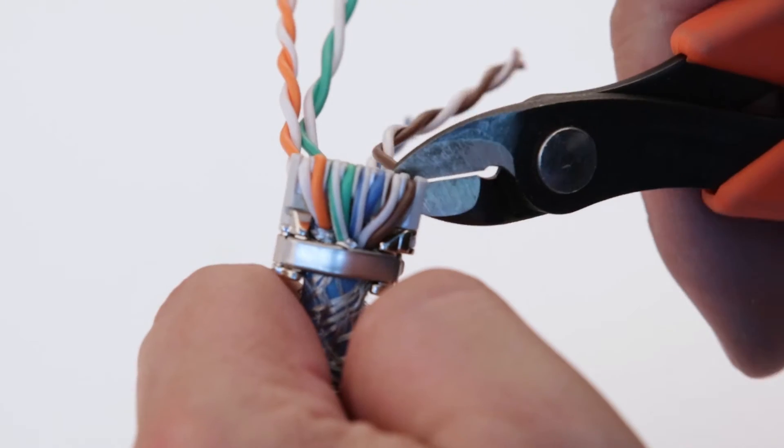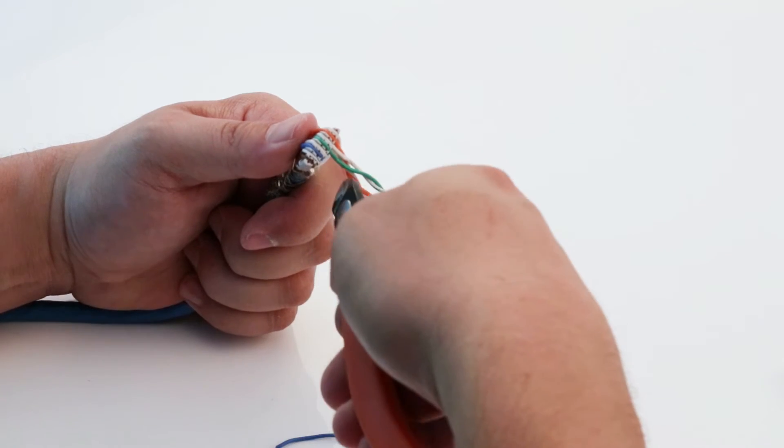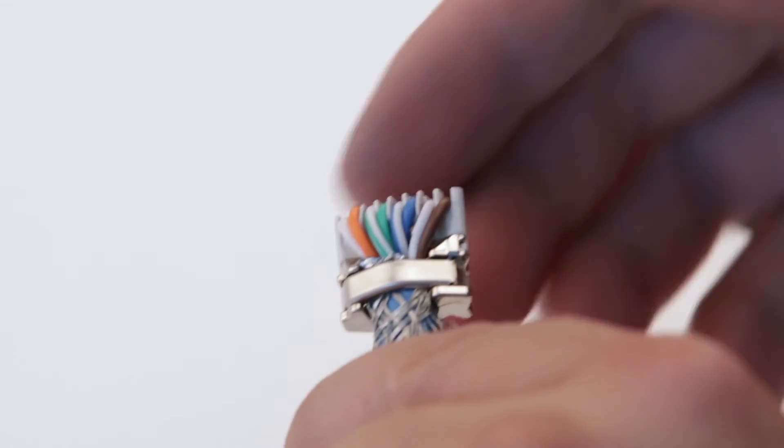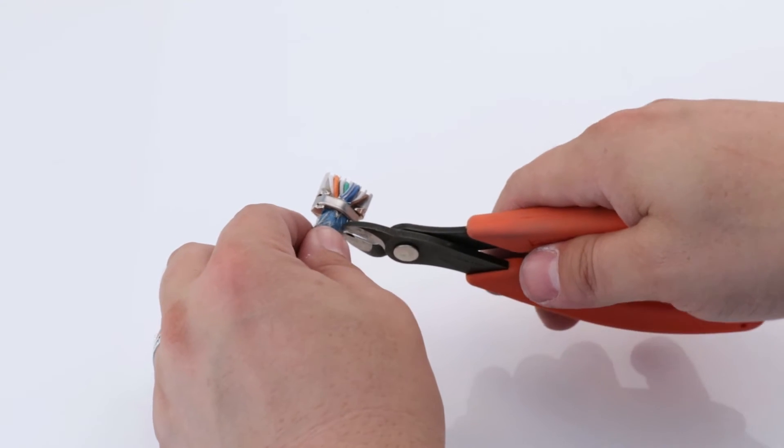Trim the wire pairs so that they are flush with the edges of the channels. Trim the excess braided shield.